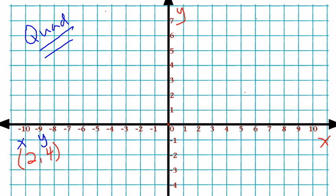If we wanted to graph the ordered pair 2 comma 4, the first thing we need to do is start at the origin, which is the point smack in the middle of our coordinate plane. This is the ordered pair 0 comma 0, which simply means that at this point in your coordinate plane, the x-value is 0 and the y-value is 0. So when graphing on the coordinate plane, this is your starting point.